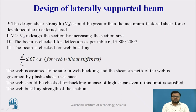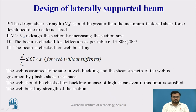The design shear strength Vd should be greater than the maximum factored shear force from external loads. If V is greater than Vd, we have to redesign the section by increasing the section size. We also take a deflection check as per Table 6 of IS 800-2007. This covers the checks for beam strength in bending, shear, and deflection.